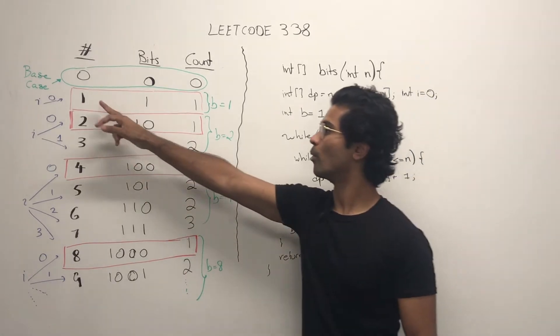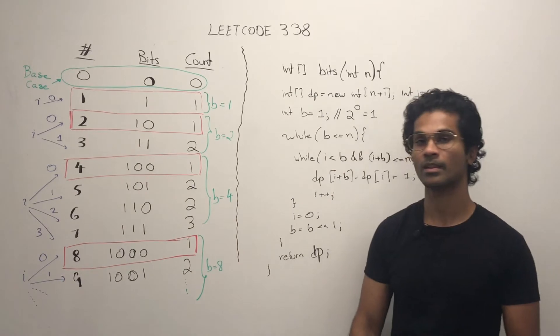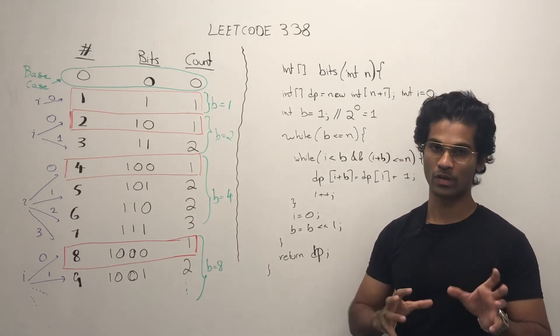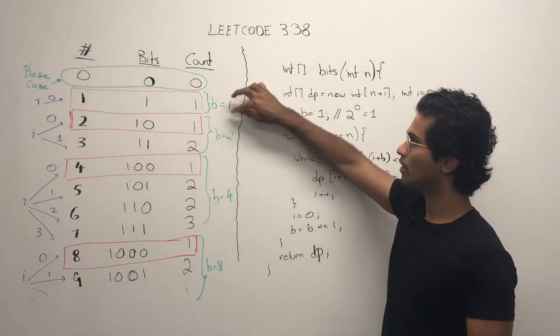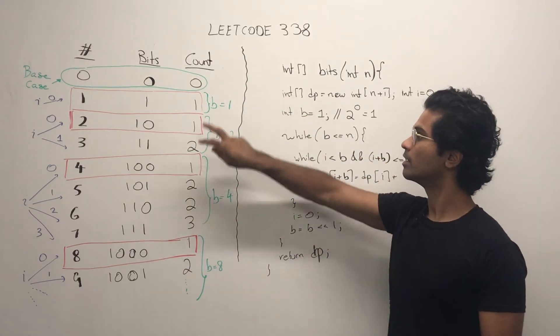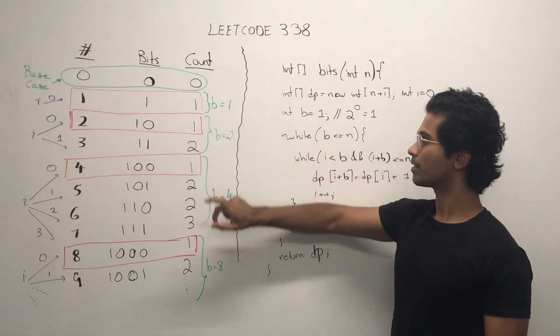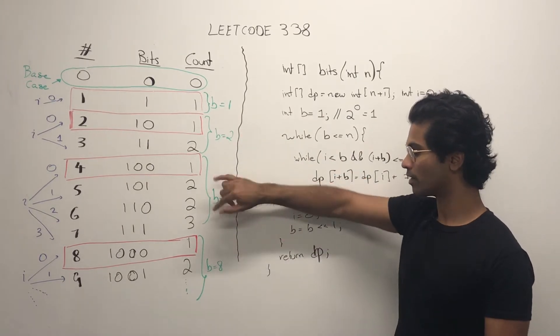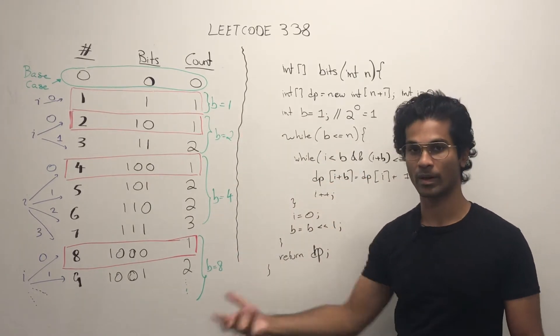Another thing you'll notice is that these powers of 2, so 1, 2, 4 and 8 have these blocks sort of attached to them. So this B is going to be for let's say block, is of size 1, this is of size 2, this is of size 4, this would be of size 8 if we kept going.